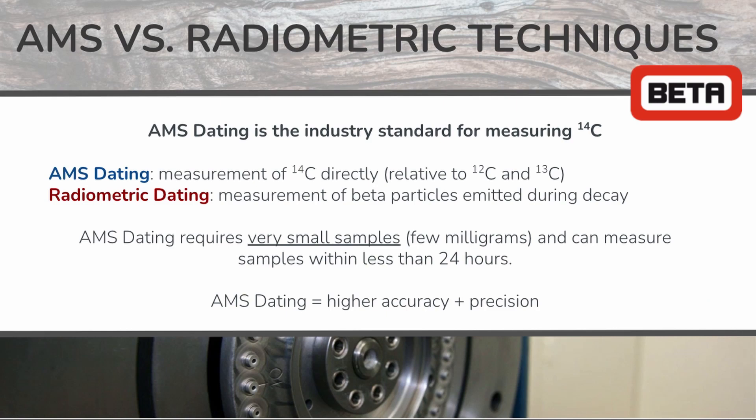Radiometric dating involves quantifying the amount of carbon-14 present by measuring the emitted beta particles from its radioactive decay. Gas proportional counting involves converting samples to CO2 gas, followed by detection and counting of the beta particles.